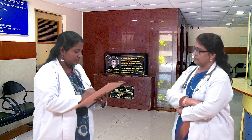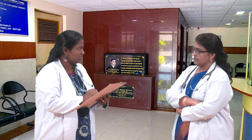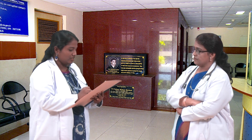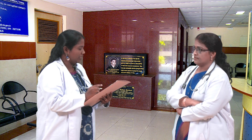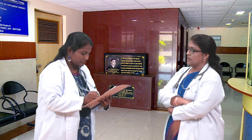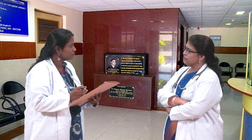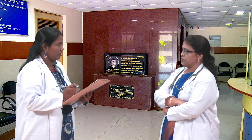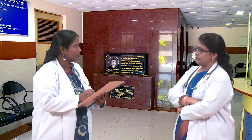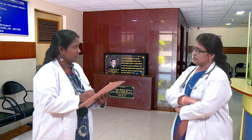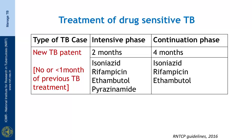I have examined her. She weighs around 38 kg. She is not anemic, not jaundiced, and there is no pedal edema. So, what treatment for TB would you like to prescribe for this patient? She is a newly diagnosed TB case. She does not have any previous treatment history and she is sensitive to rifampicin.